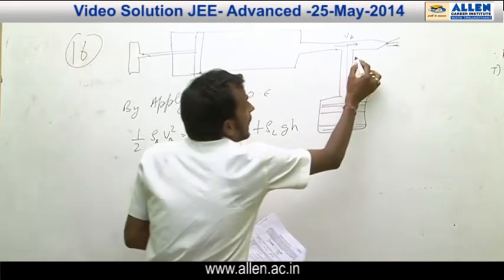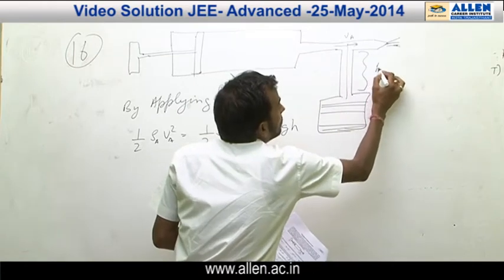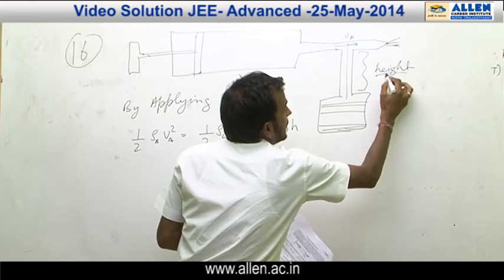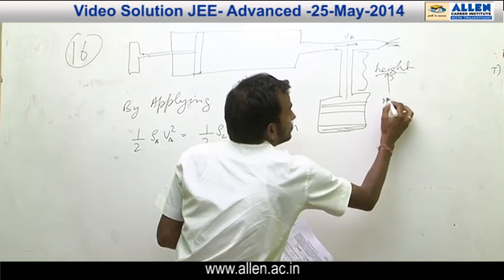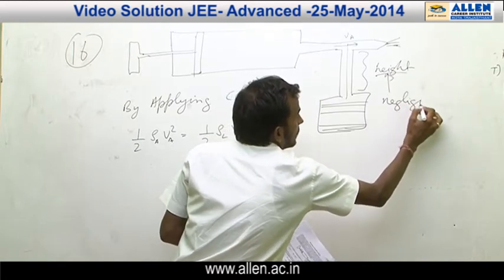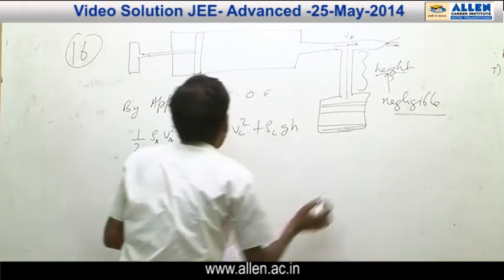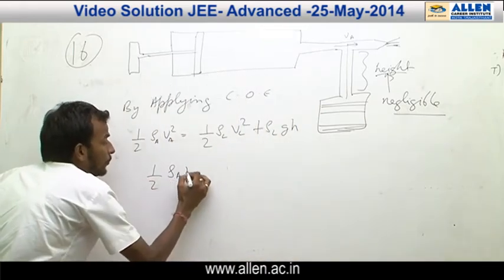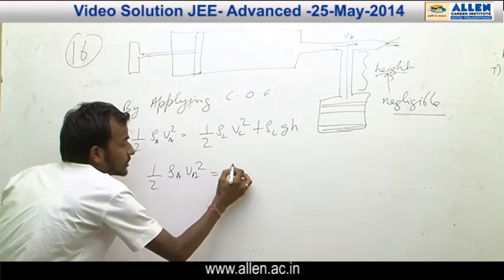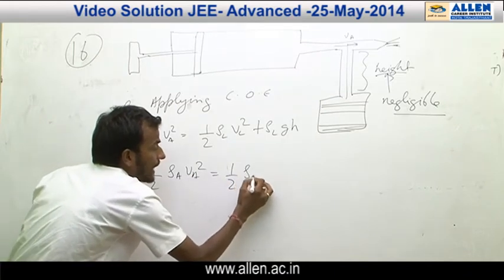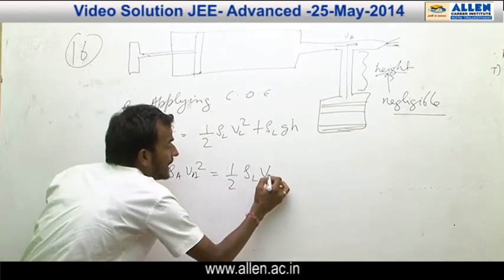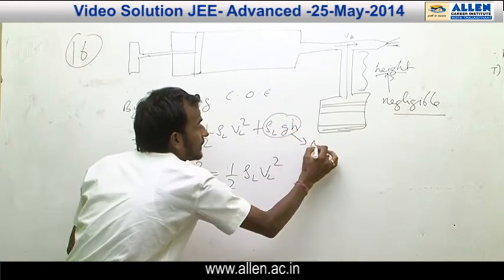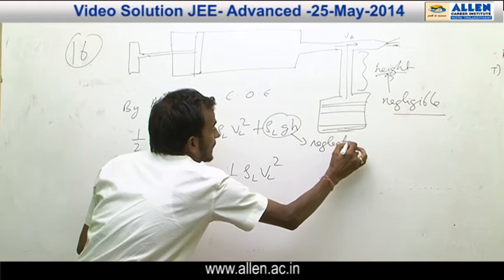By applying conservation of energy we get this equation. As the height of this liquid column is negligible, we can say that half rho_a v_a squared equals half rho_l v_l squared — the potential energy portion is neglected due to the less height.